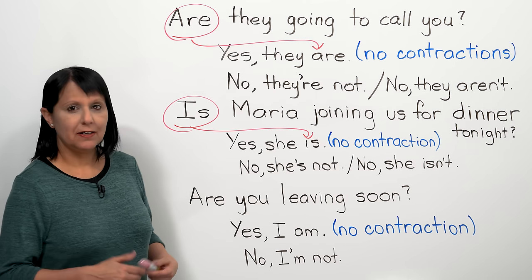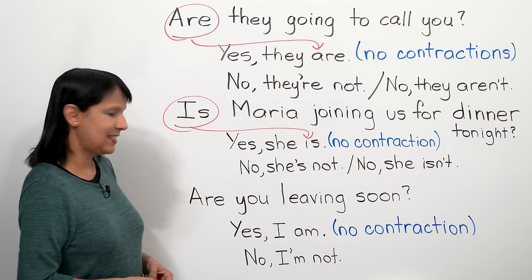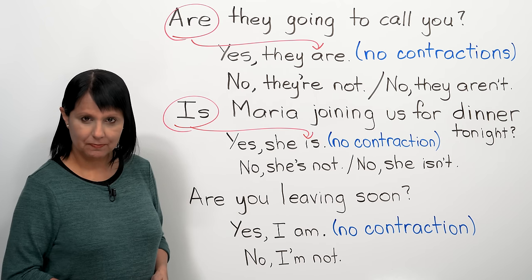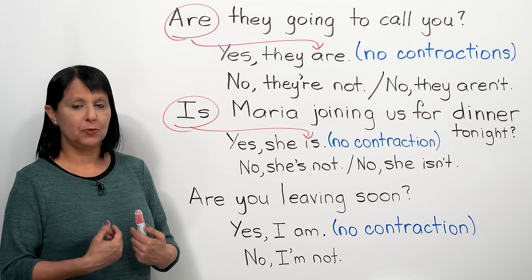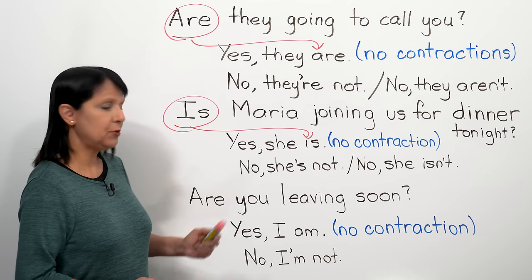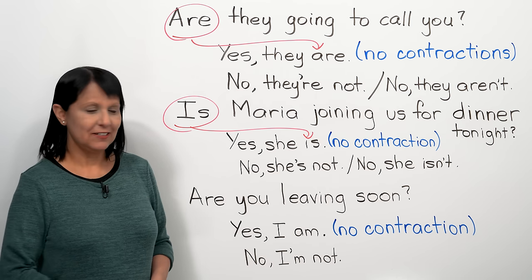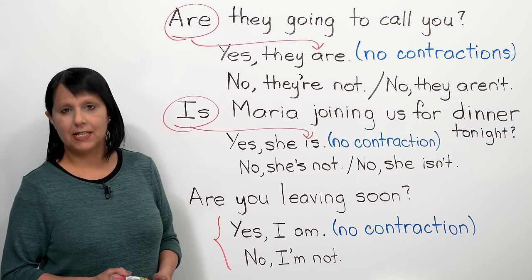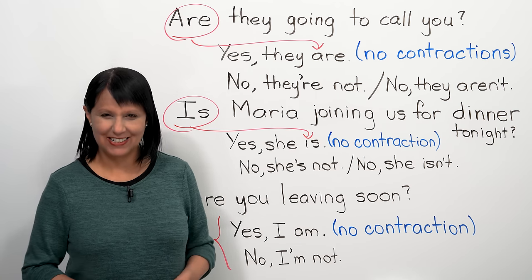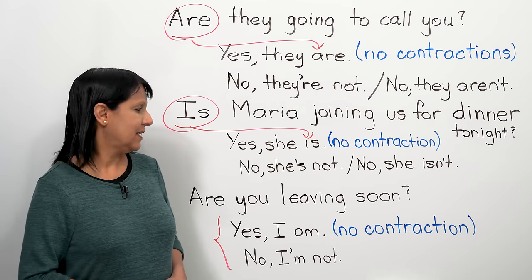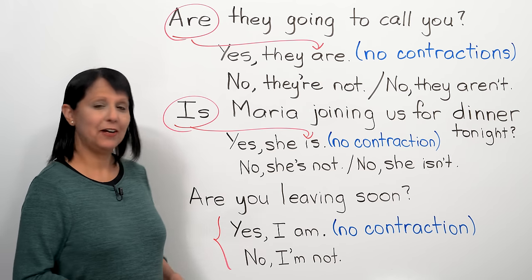Here's something important to learn because very often people will be asking about you. 'Are you leaving soon?' Here the answer can't be taken from 'are' because they're asking about you and you answer with 'I.' So: 'Yes, I am' or 'No, I'm not.' These are good to memorize as answers. Note that in the positive answer there's no contraction — 'Yes, I am' — but the negative does have one: 'No, I'm not.'